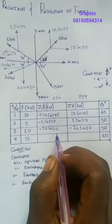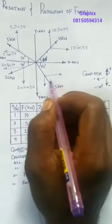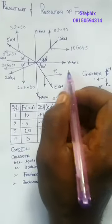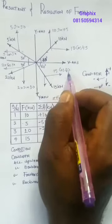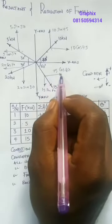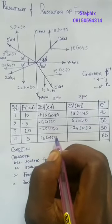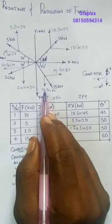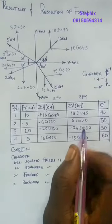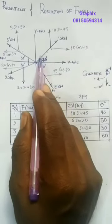The next force will give me 15 cos 60 for the horizontal component and 15 sin 60 for the vertical component. This is facing right, so it is positive: 15 cos 60. The vertical force here is facing downward, so it will be minus 15 sin 60. Note that all forces here are inclined to the horizontal.